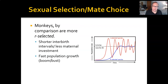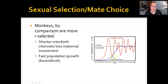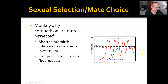Compared to apes, monkeys are r-selected — they have shorter interbirth intervals, less maternal investment, and faster population growth. They have more boom-bust cycles. On this chart, the K-selected species population growth is represented in blue and the r-selected species in red. The r-selected species has very rapid population growth but also very rapid declines, whereas the K-selected will have a more steady but slower population growth.